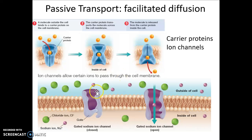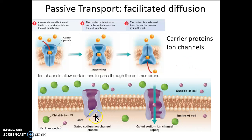Whether a molecule enters through a carrier protein — like a turnstile that changes shape as substances pass in and out — or through a channel, which is a narrow opening, the cell is using no energy. But the cell can control whether the carrier protein or ion channel functions at all by simply opening or closing it. For every substance that enters the cell, there is a membrane protein that controls its access.